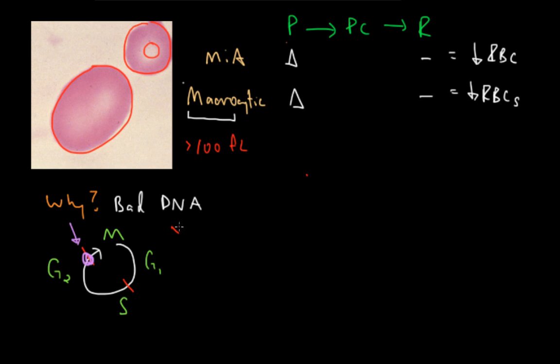In the macrocytic anemias, this is exactly what happens. Since all of the DNA hasn't been copied correctly, the cell is just going to keep growing and growing until all of that DNA is copied and the cell can finally divide. What that results in is really big cells, since the cells keep growing until they're ready to divide.